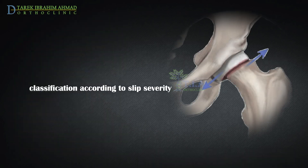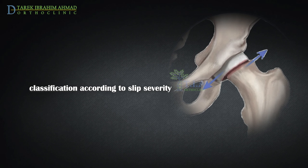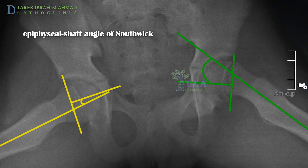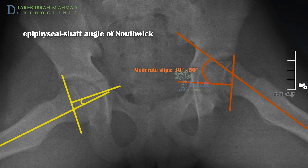The method of grading slip severity is according to the epiphyseal shaft angle of Southwick, which is measured on the frog-leg lateral radiograph. Mild slips have less than 30 degrees of displacement. Moderate slips have between 30 and 50 degrees. Severe slips have greater than 50 degrees of displacement compared with the unaffected side.